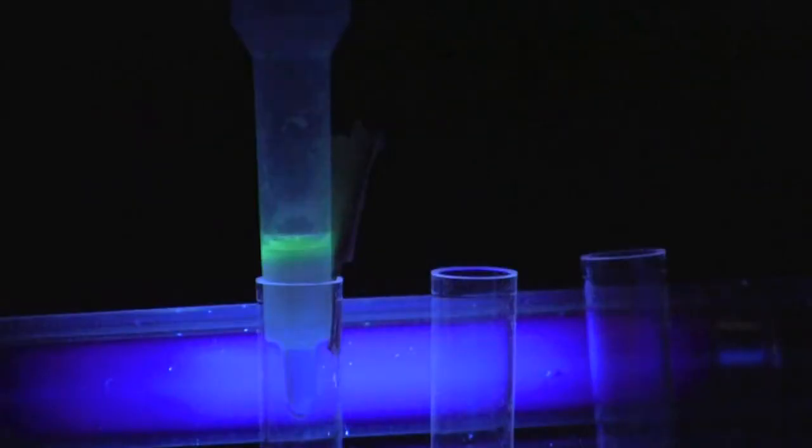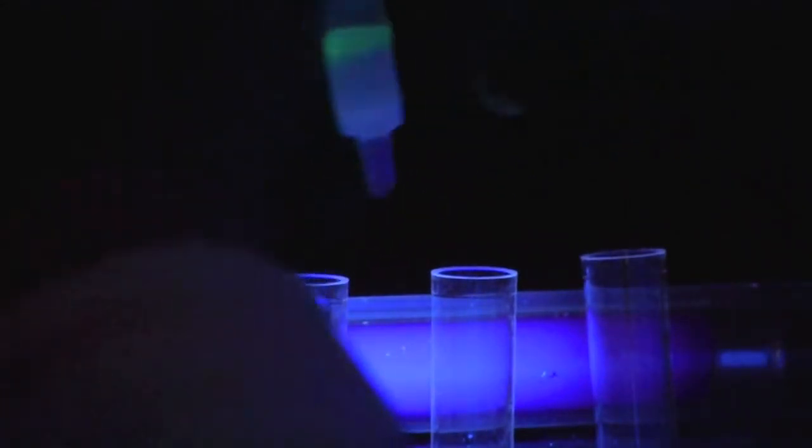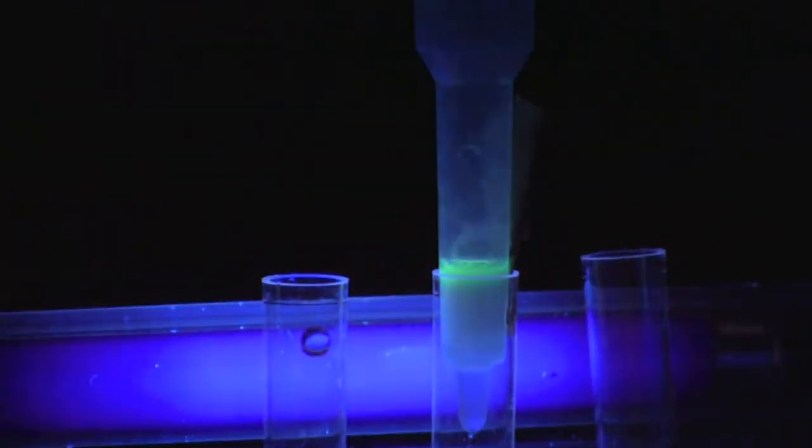At this point, transfer the column to collection tube number 2. The remainder of this activity can be performed in a darkened room with a handheld UV light to increase the visibility of the GFP.